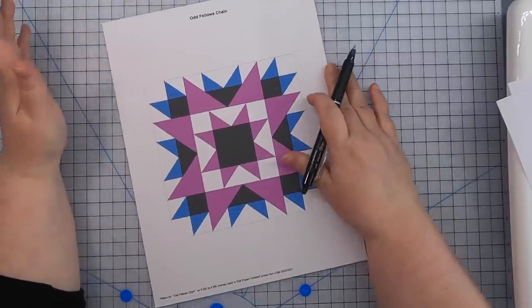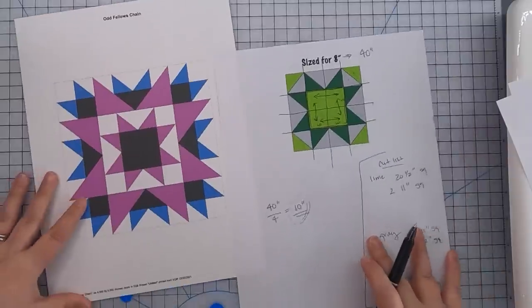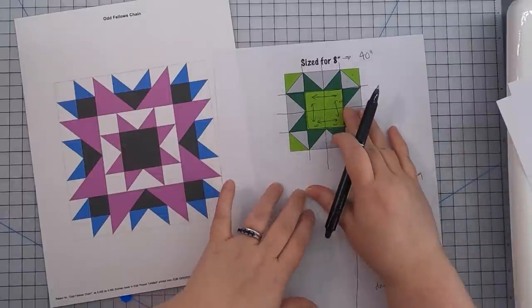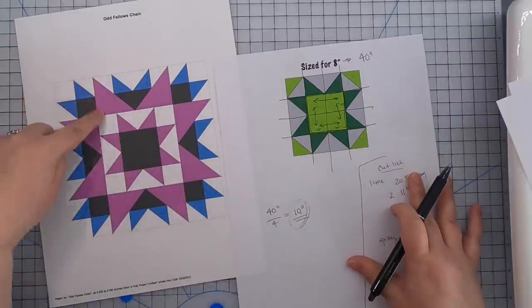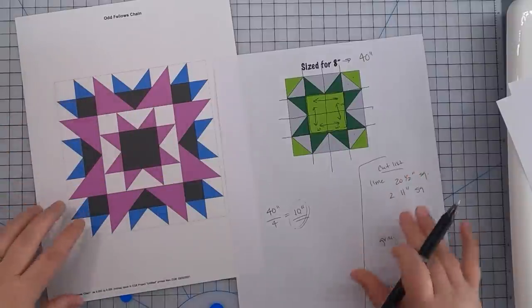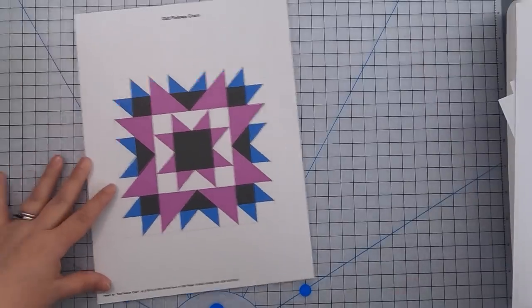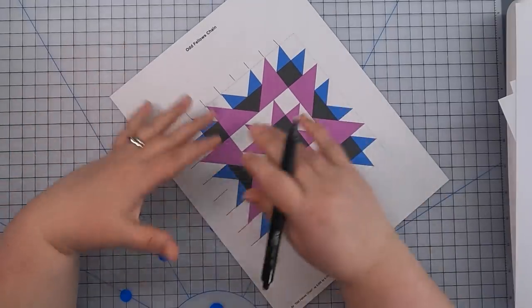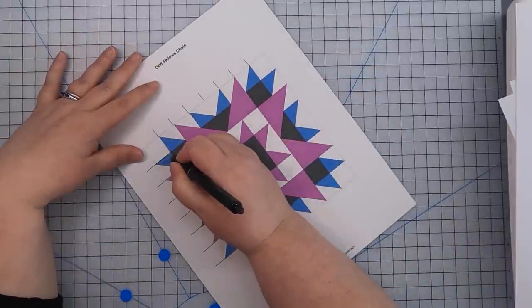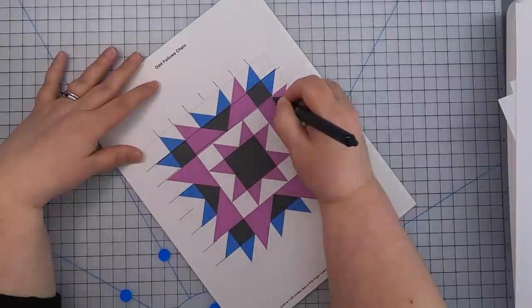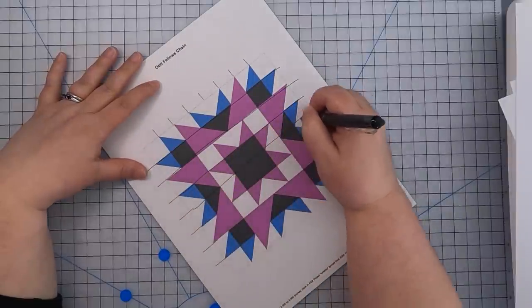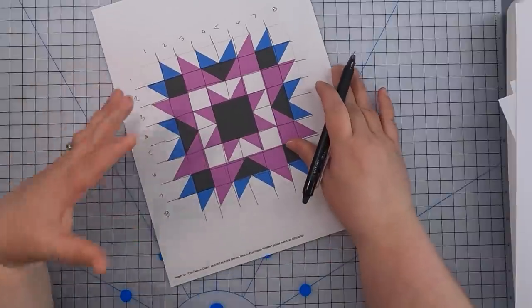So now let's look at a block with a little bit more complexity to it. This is the Odd Fellows chain, which I found in my EQ8 software. And it is very similar to this block that we did for our four patch block. It has those flying geese units, this big center unit, and these little corner units. But it is much more complex. So this is actually an eight by eight grid block. And it is just the same as the blocks that we already did. We can draw our lines across, maybe with the ruler or something, so you're not as messy as I am. Now resizing a block like this that has a really large grid is a little bit more daunting and you're a little bit more likely to end up with that key number size that is not a whole number.